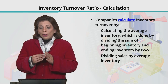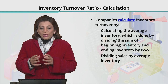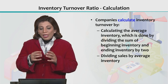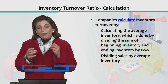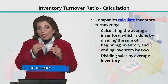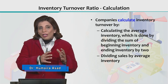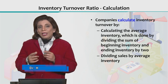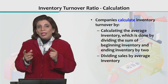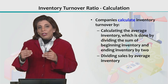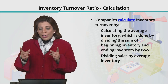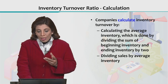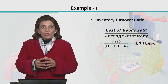Companies calculate inventory turnover by considering the average inventory value. You take the sum of the inventory value at the beginning of the time period and at the ending of the time period — whether that is 1 year or 6 months — and calculate the average. Then you take the sales value or the cost of goods sold.